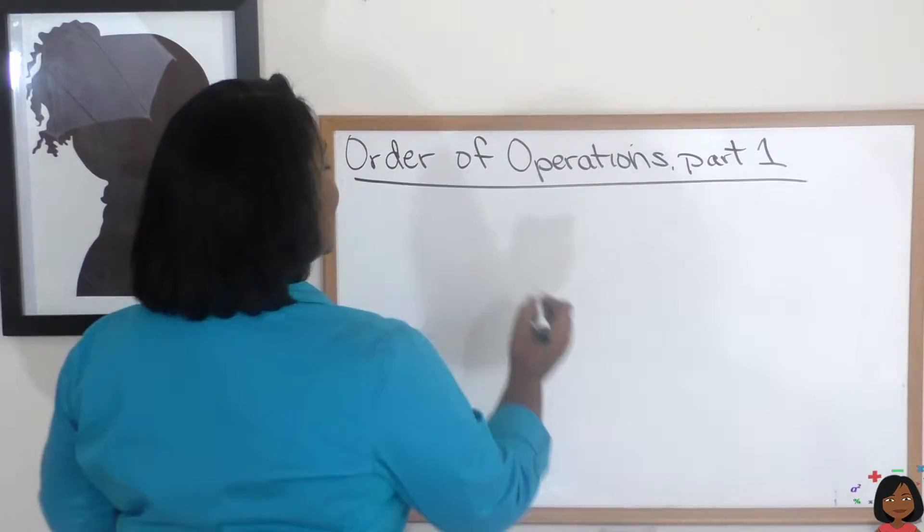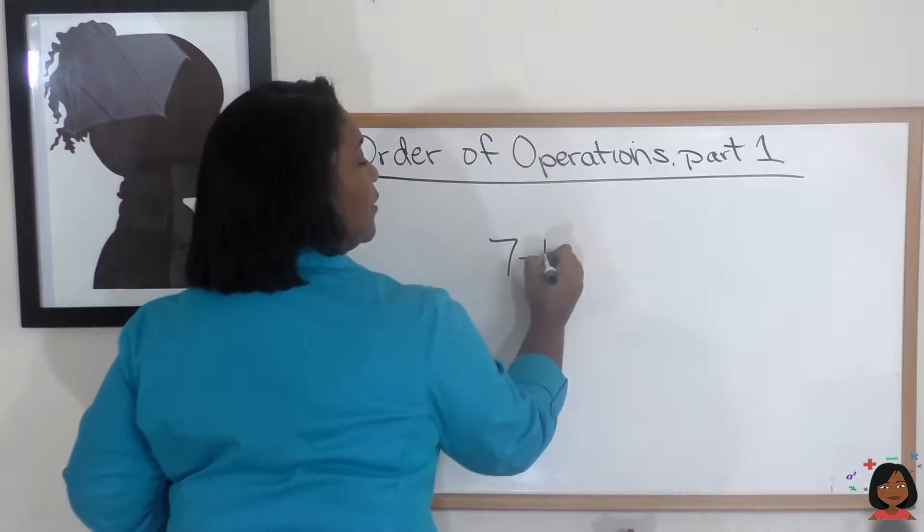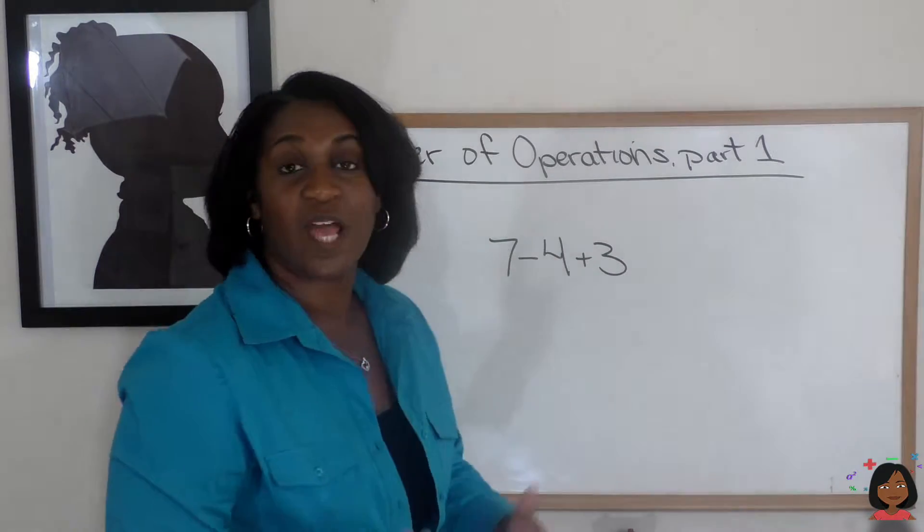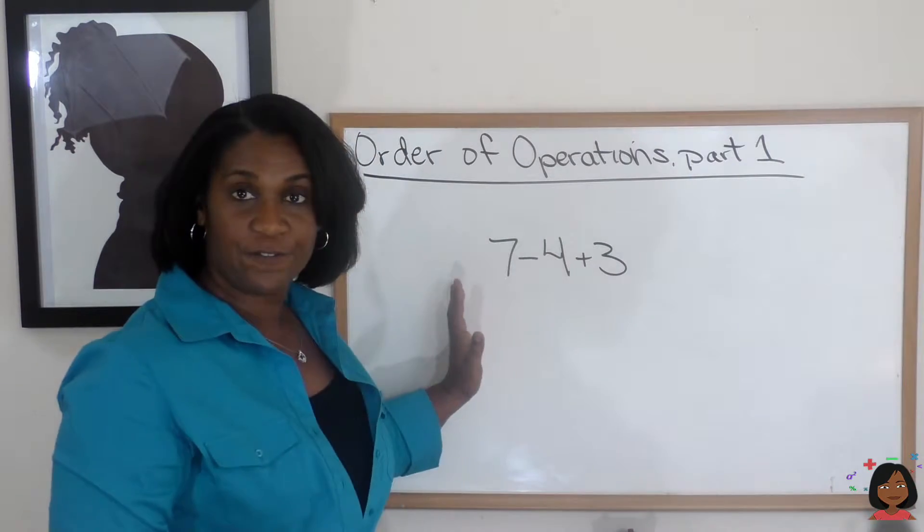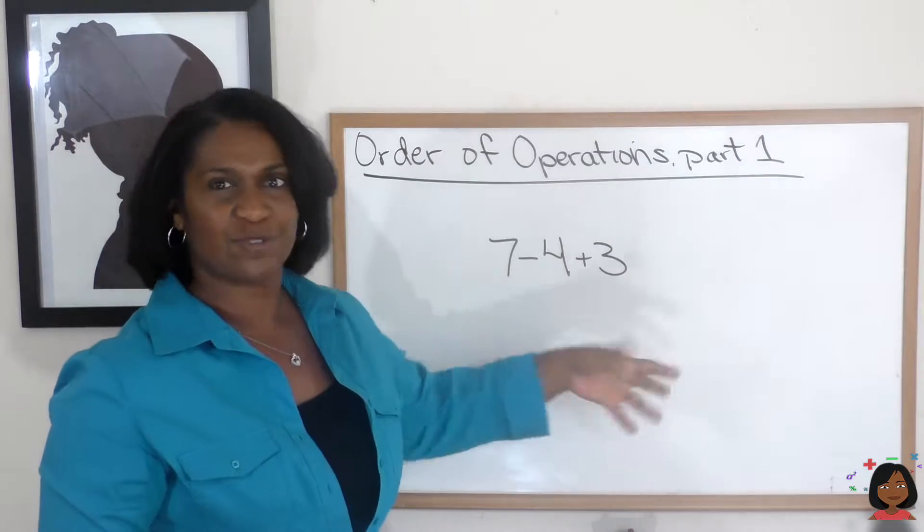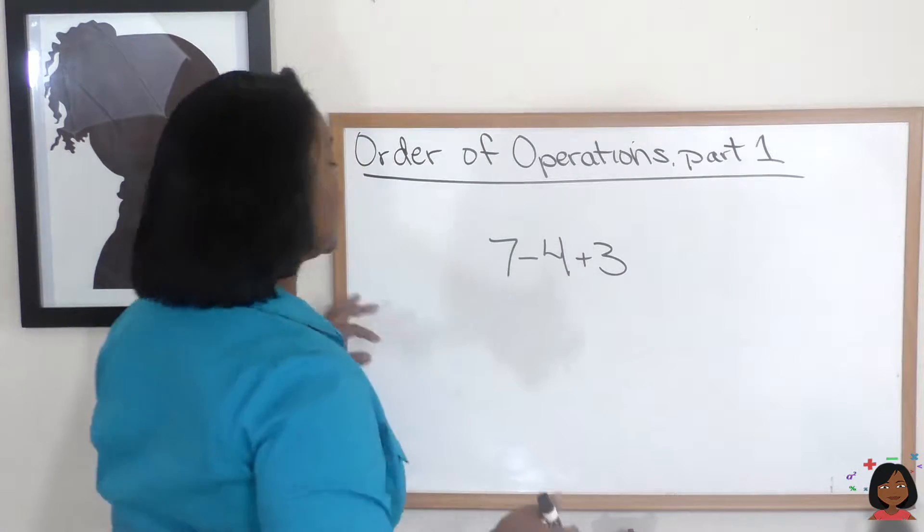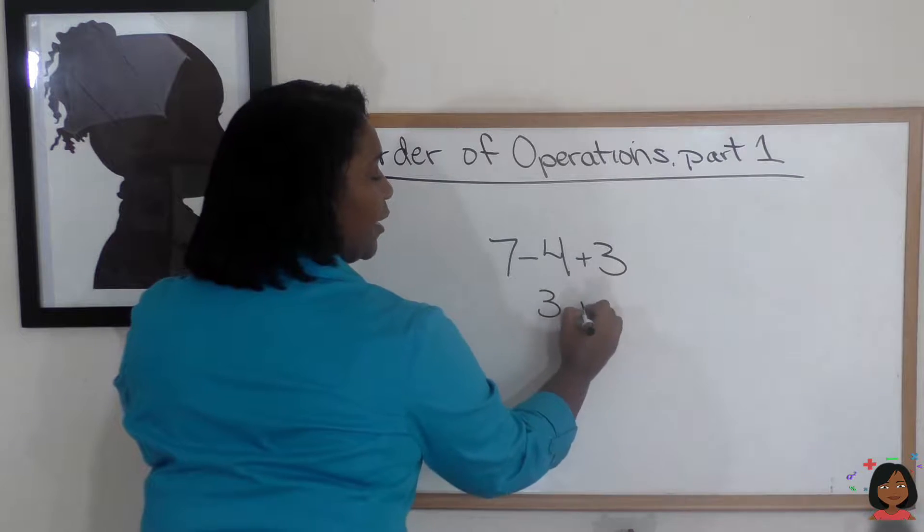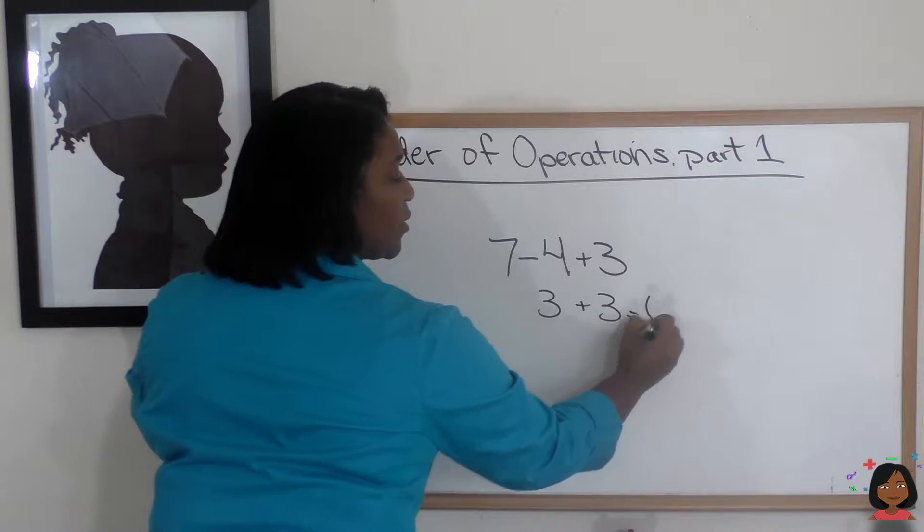So let me give you a few numbers. Let's say we have the number 7 minus 4 plus 3. Well, typically we start on the left and work our way right, just like reading. So let's do it. 7 minus 4 is 3. 3 plus 3 equals 6.